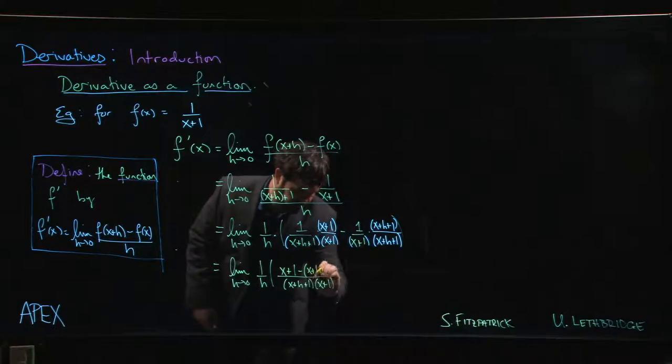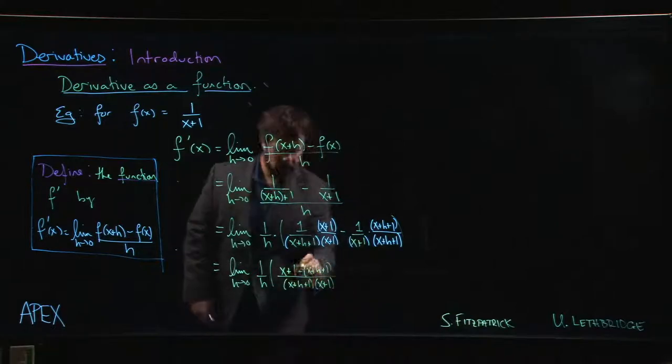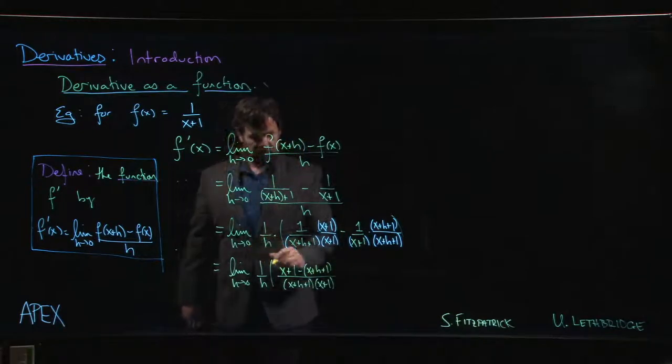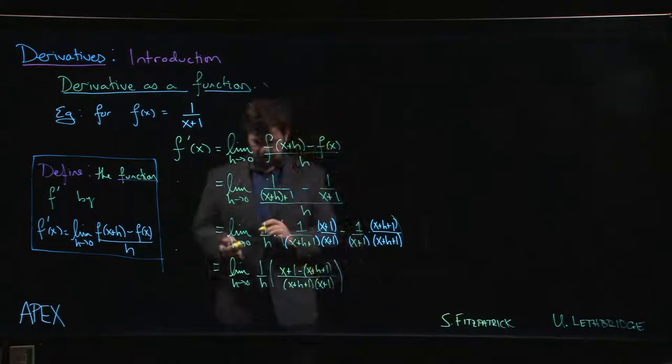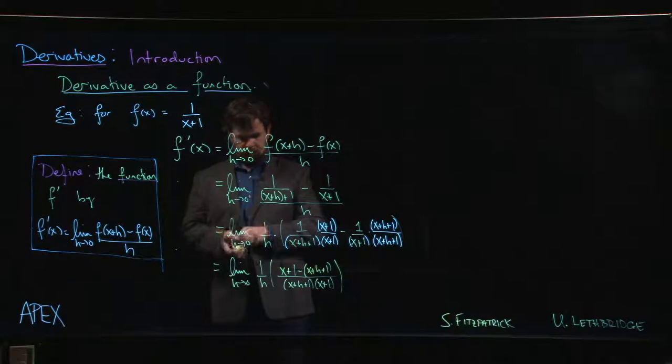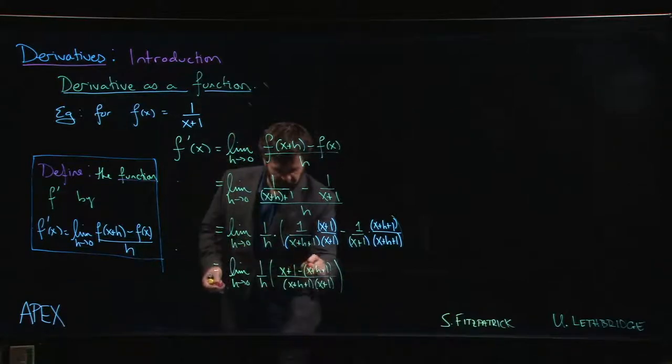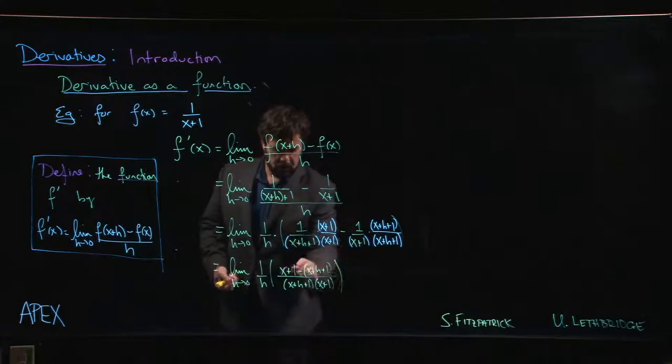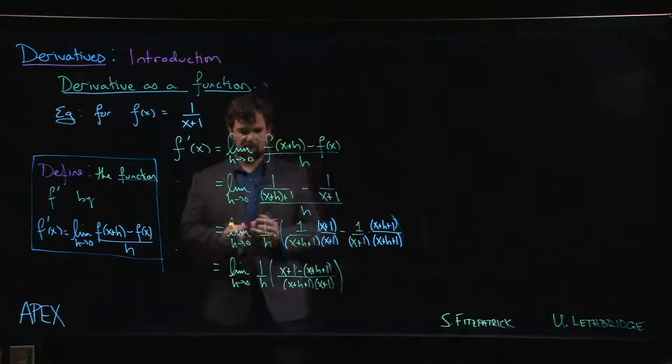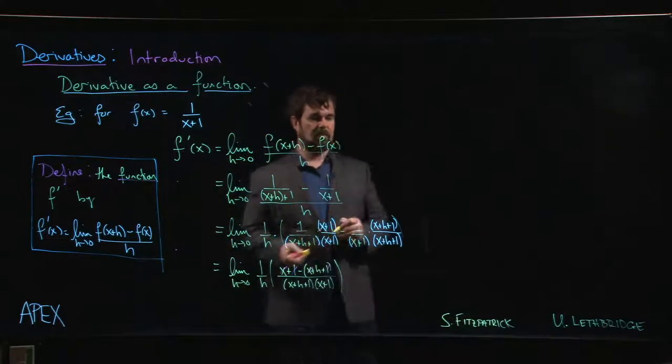We have x plus 1, subtract. Here's the next algebra mistake you're likely to make: that minus sign applies to everything over here. So it's minus x minus h minus 1. It's going to hit all three of those terms. And because it hits all three, we have x minus x cancels, 1 minus 1 cancels.